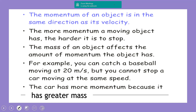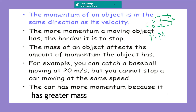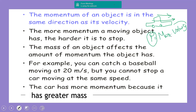Now let's have some more examples. The momentum of an object is in the same direction as its velocity. For example, a car has a mass and a velocity, so the direction of the momentum will be the direction of the velocity. We write momentum as P, and since mass is a scalar quantity, the direction of the momentum depends on the direction of the velocity.